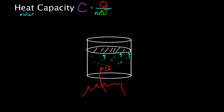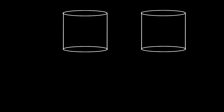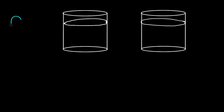If we weld the piston shut so it can't move, we get heat capacity at constant volume. If we allow the piston to move freely so that pressure inside remains constant, we get heat capacity at constant pressure. For constant volume: heat goes in, but the piston does not move, so no work can be done. Q is the only thing adding energy into the system. From the first law, delta U = Q + W, so Q = delta U minus W. Since W is zero here, the heat capacity at constant volume equals delta U over delta T.